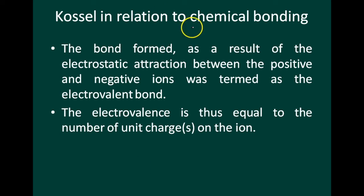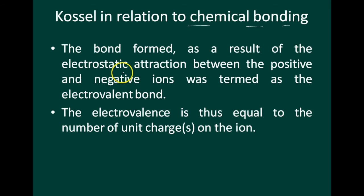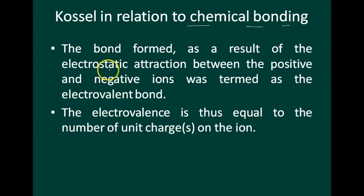Next I will explain Kossel's relation to chemical bonding. In the periodic table, the highly electronegative halogens and highly electropositive alkali metals are separated by noble gases.